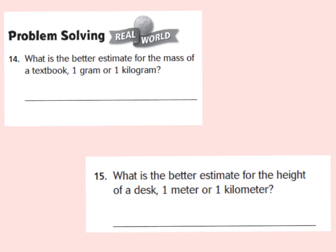Let's take a look at our two problem solving questions. Number 14: what is the better estimate for the mass of a textbook — one gram or one kilogram? Number 15: what is the better estimate for the height of a desk — about one meter or one kilometer? You should have said the mass of a textbook is about one kilogram, since one gram is about the mass of a paper clip or dollar bill. And the height of a desk is a meter, because a kilometer is about half a mile.